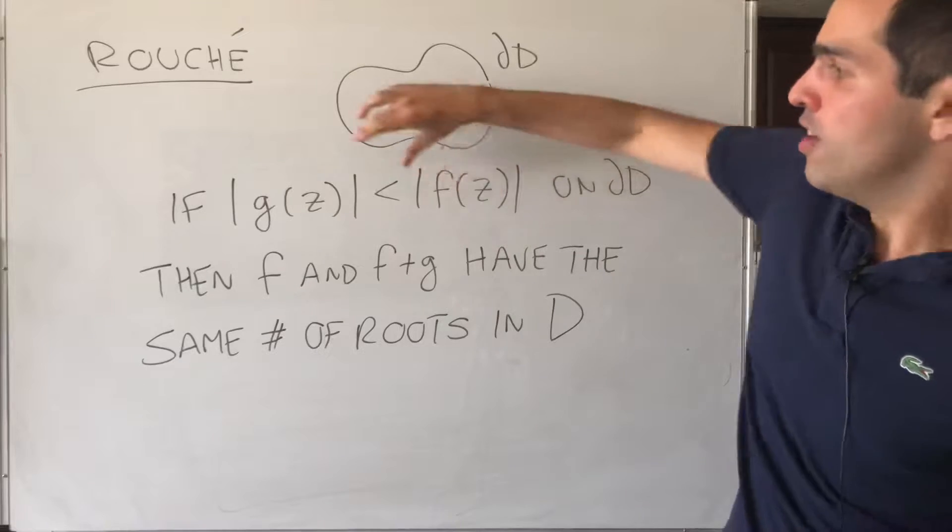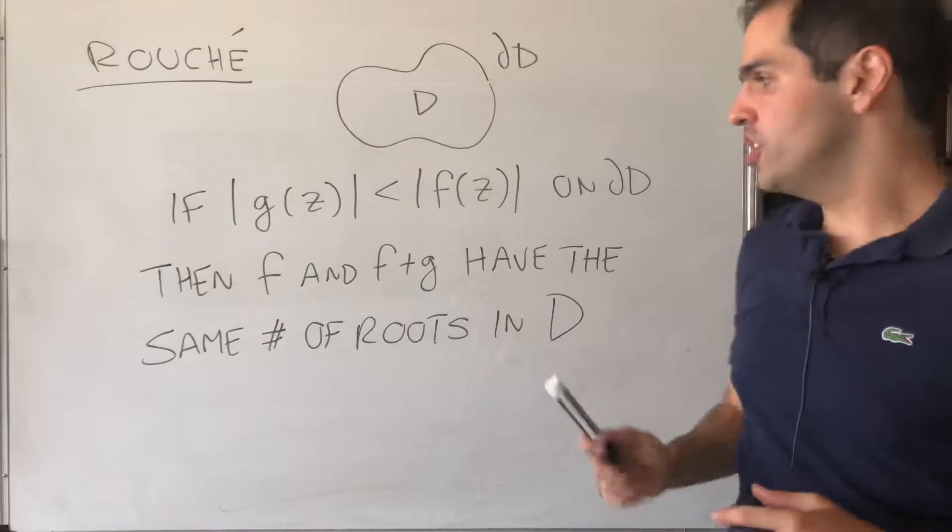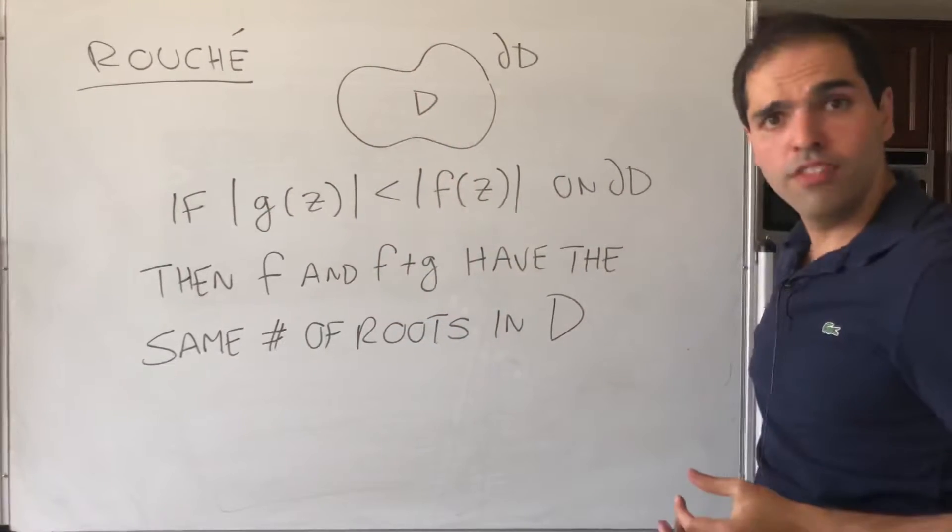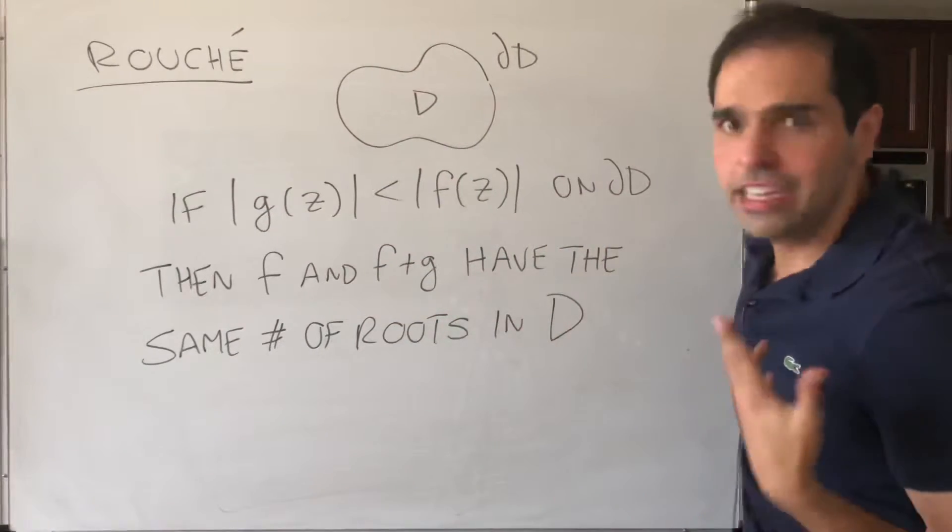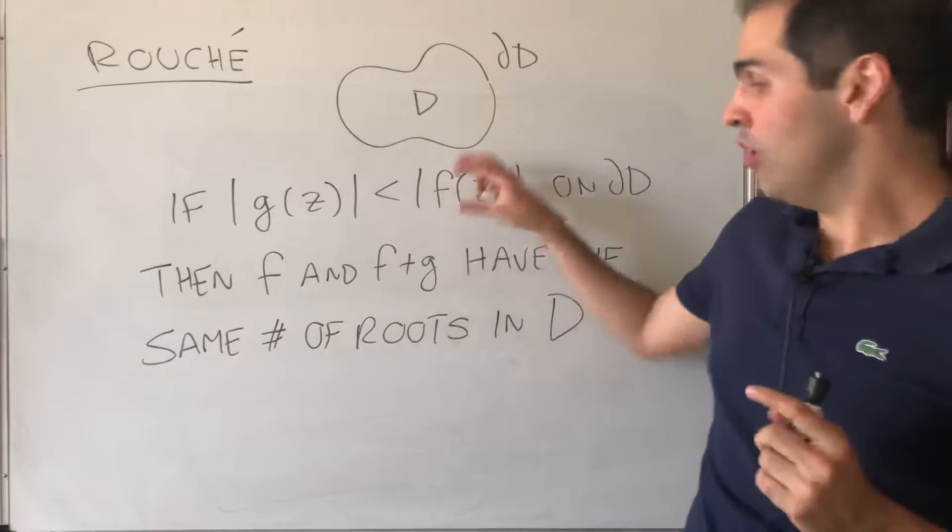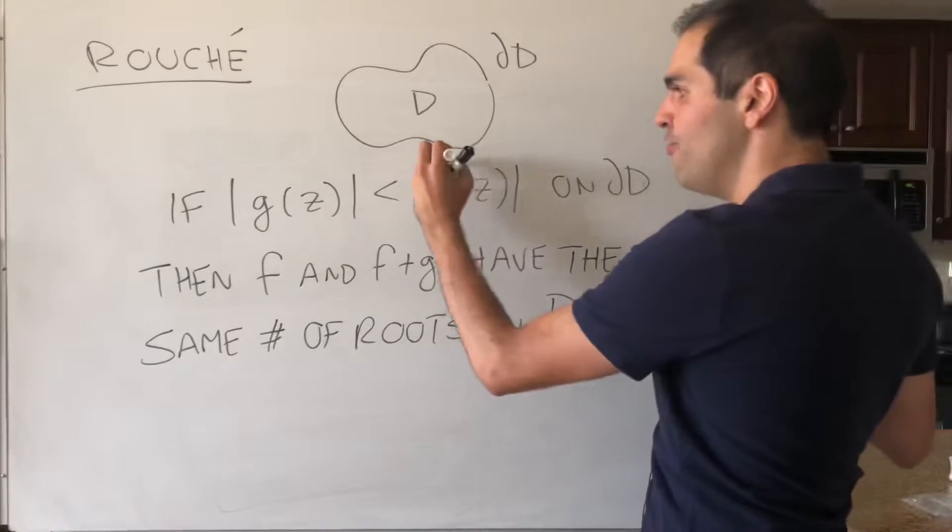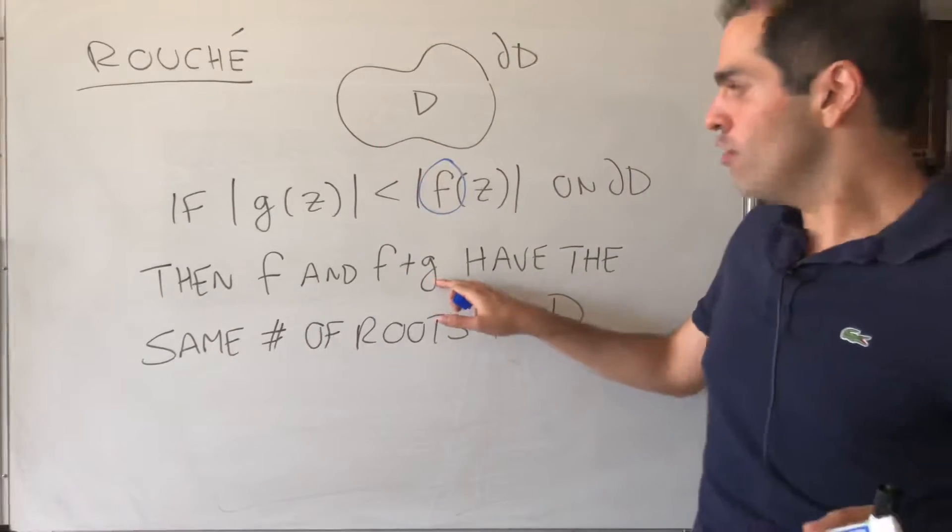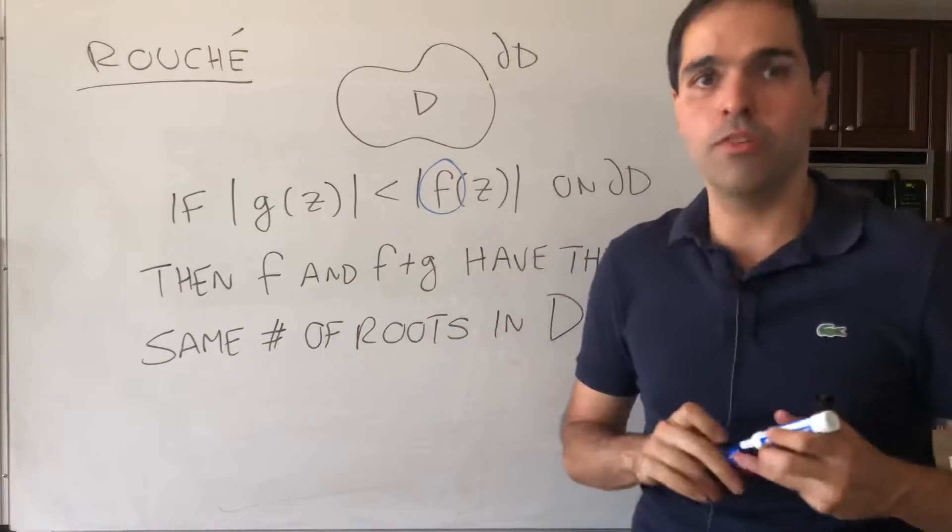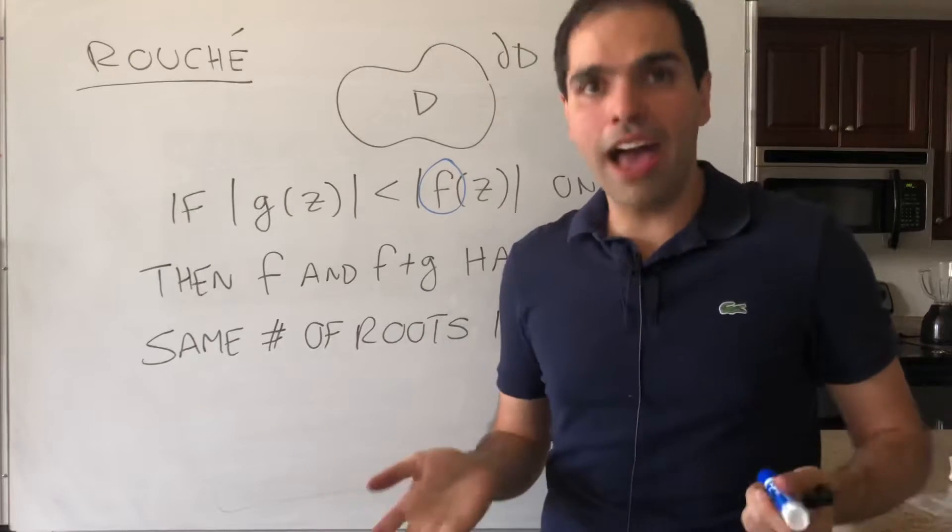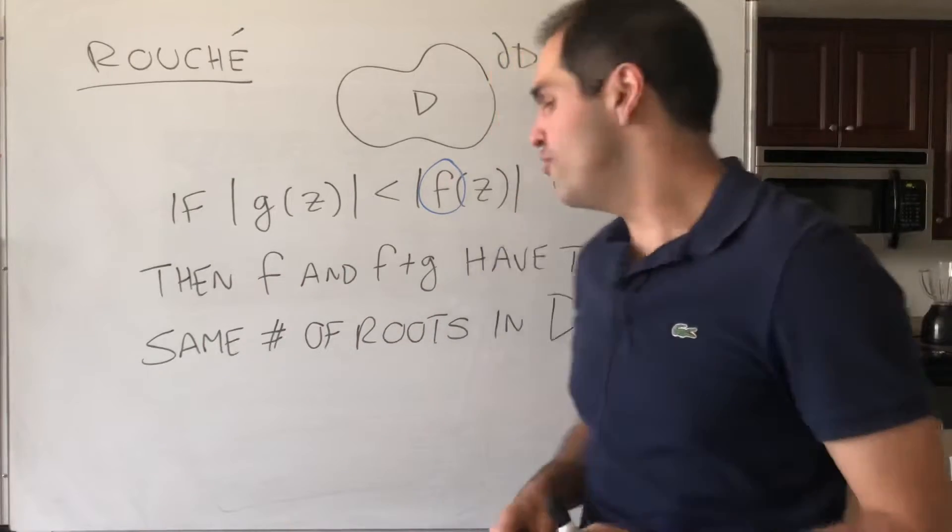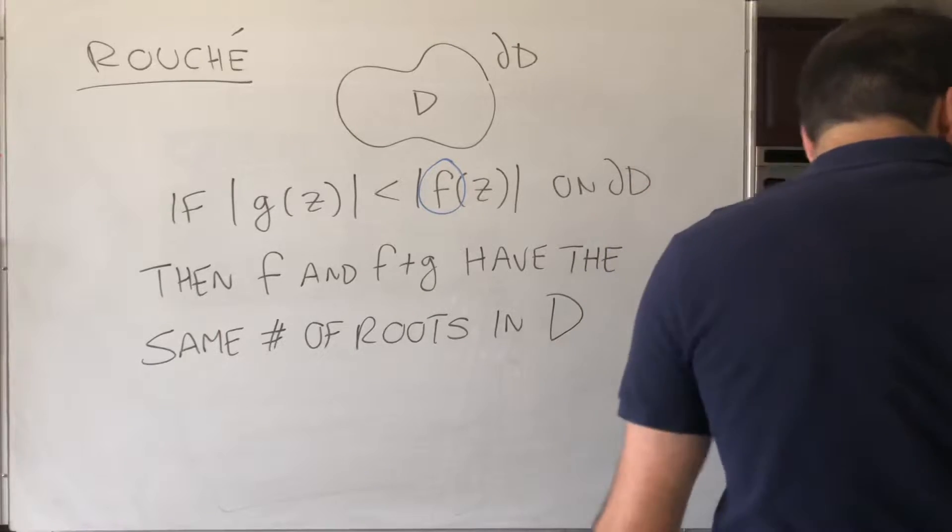suppose F dominates a certain function G, then you can start with F and perturb it with the little function and still get that they have the same number of roots. And why is this useful? Because in practice, the function F is easy, and the function G is such that the sum gives us our polynomial.